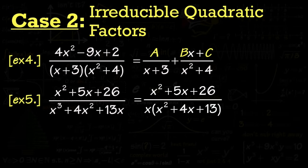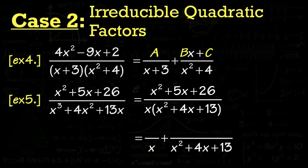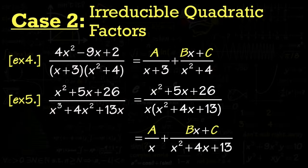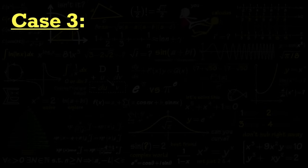Another example with a bigger rational function: the degree on top is 2 (from x squared) and the degree on bottom is 3 (from x cubed), so we're good. We factor the bottom — x squared plus 4x plus 13 cannot be factored with real numbers. Breaking it down: blank over x, and blank over (x squared + 4x + 13). The first fraction gets A, the second gets Bx plus C since the denominator is a quadratic.